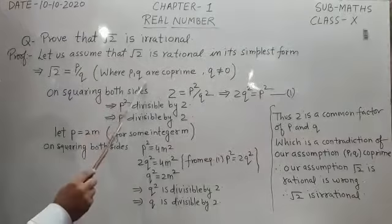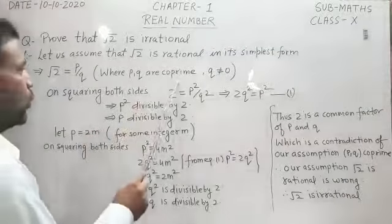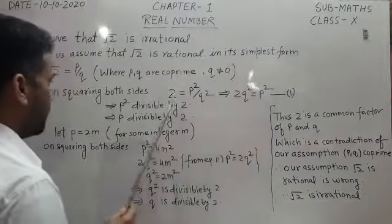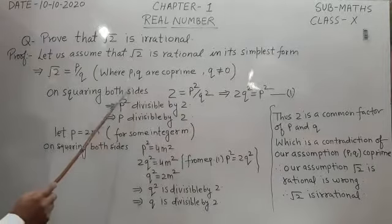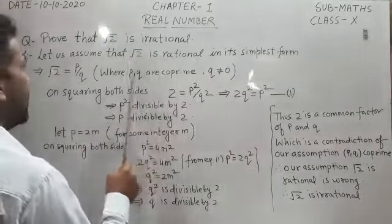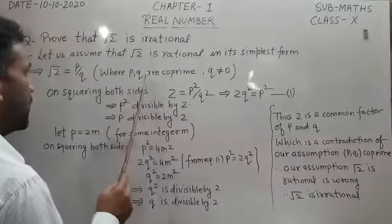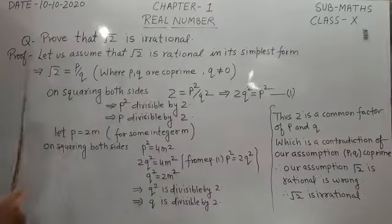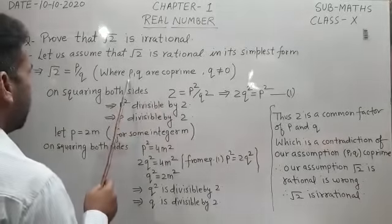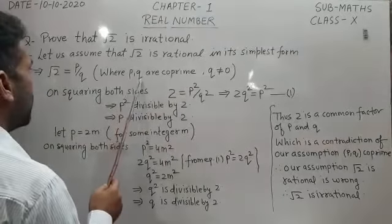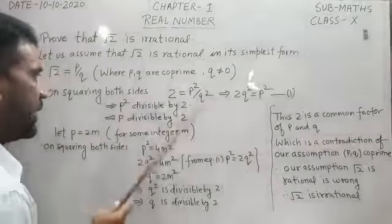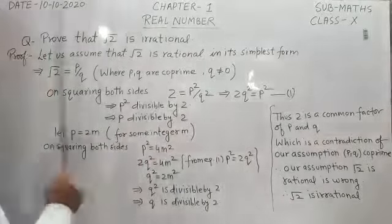Here p and q are co-prime because it is in simplest form. It means the HCF of p and q is 1, and in other words we can say p and q are not divisible by any number other than 1.